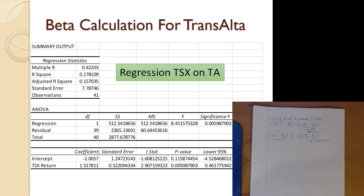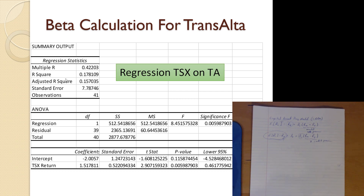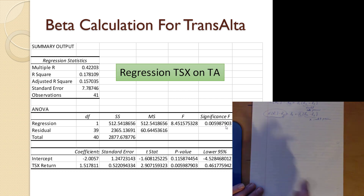I ran a couple of regressions using pre-2020 numbers, because 2020 was a fairly tumultuous and unique year. I have the rate of return for TransAlta, which is a power company in Alberta, Canada, and then CIBC — a bank stock. We look at our R-squared and see it's 0.178, so 17.8% of the variation in TransAlta stock is explained by this model.